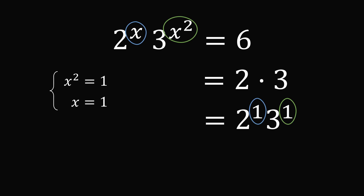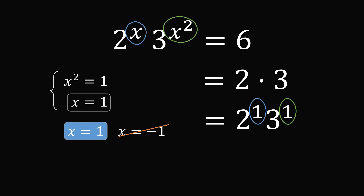This gives a system of equations. From x squared equals 1, we get x equals 1 or x equals minus 1. But the second equation gives x equals 1, so we remove x equals minus 1. That would seemingly give the only answer that x equals 1.